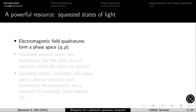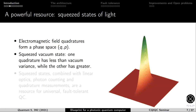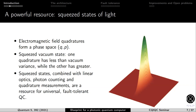Let me tell you a bit about squeezed states of light, which are the fundamental resource for the architecture. The electromagnetic field can be expressed in terms of two quadratures that form a phase space, analogous to a classical phase space for a point particle. A squeezed state is one where one quadrature has less than vacuum variance while the other has greater. These squeezed states, combined with linear optical transformations, photon counting, and quadrature measurements, are a resource for universal fault-tolerant quantum computing. They can be used to produce bosonic qubits and to construct the resource state needed for quantum computation.